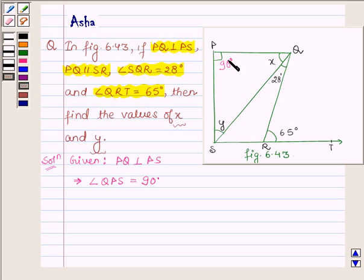So this angle is 90 degrees. Also we are given that PQ is parallel to SR and let QR be the transversal which intersects them.